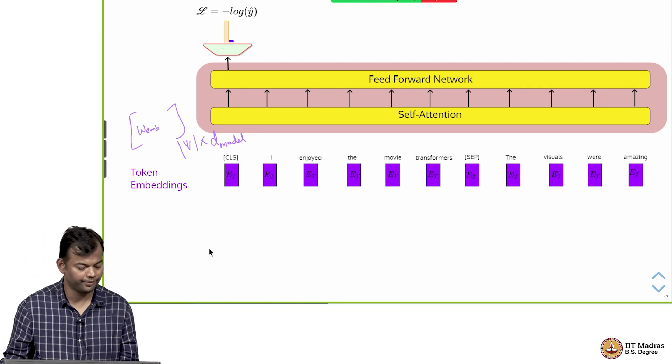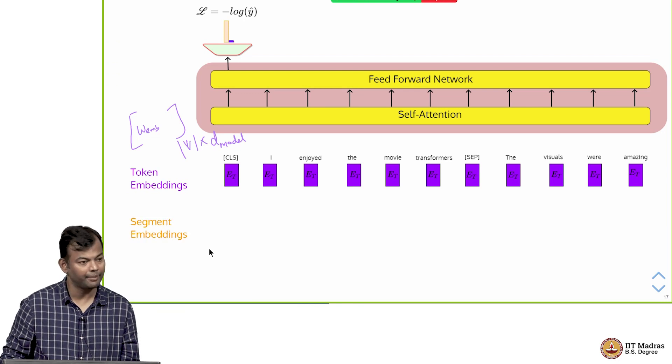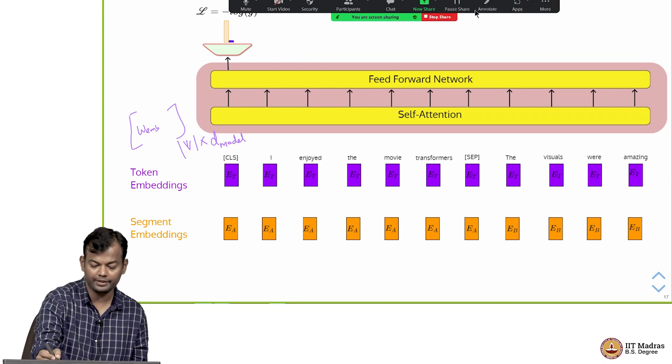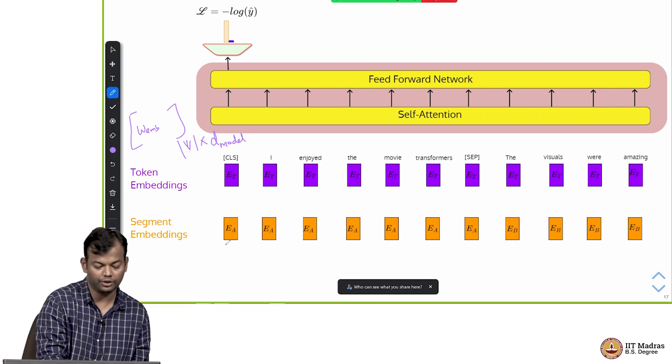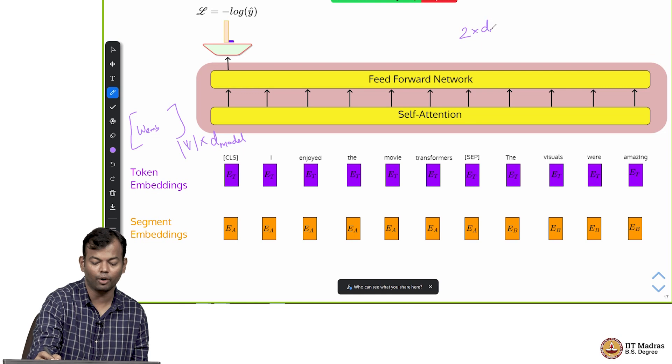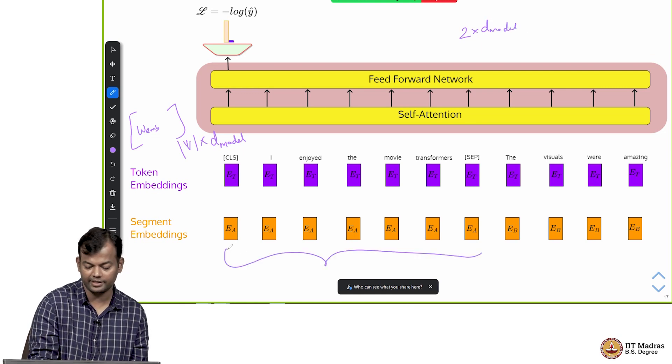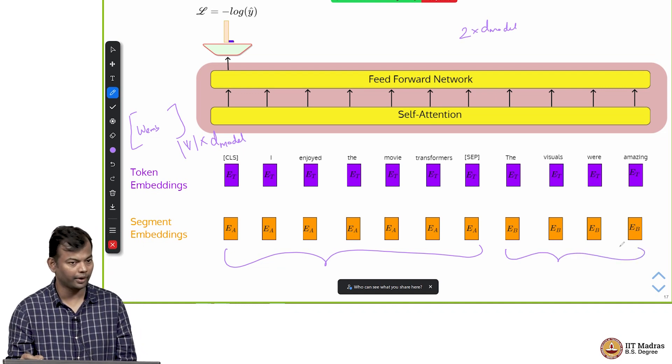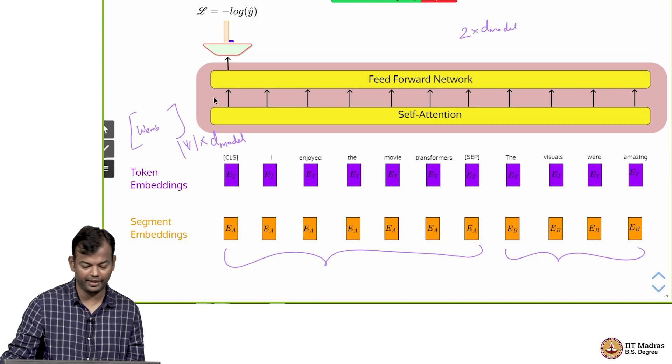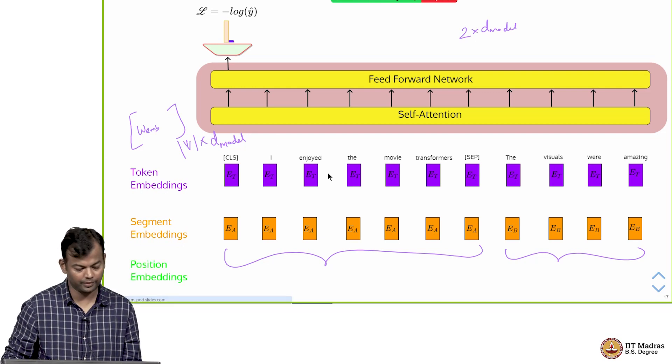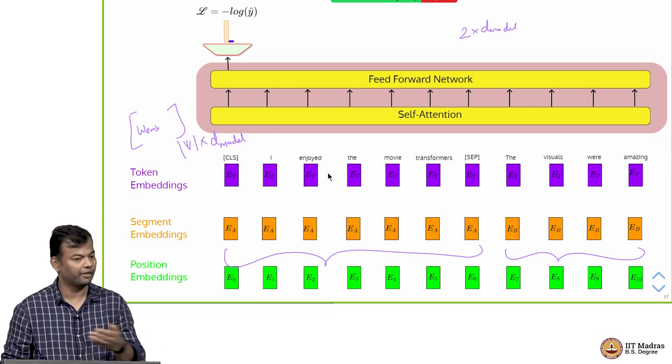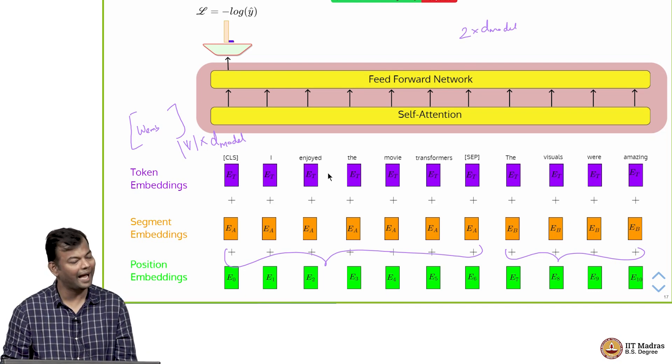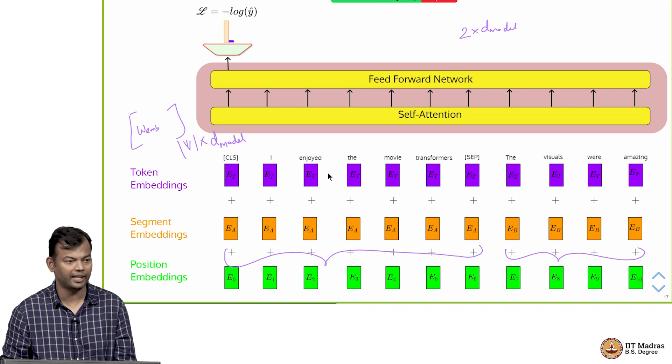In addition to that they also had segment embeddings. There were two segments possible, they had two embeddings. Think of this as a 2 cross D model matrix. This says that this is segment 1 and this says that this is segment 2. And then of course there were the positional embeddings which we had seen earlier which are from E 0 to E 512 or whatever is the maximum sequence length. They just add up all of these and feed that as the input.